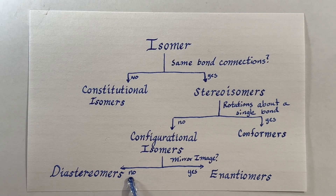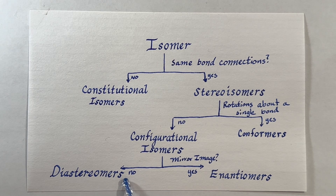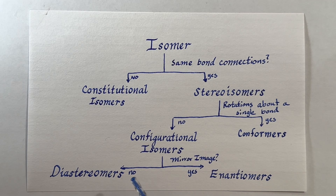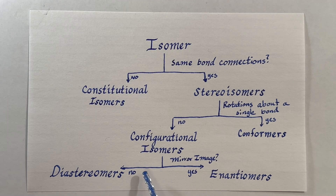Diastereomers do not have a mirror image of each other. A very good example of these would be cis and trans isomers around a double bond. Since we cannot have a rotation around those double bonds, those are unique molecules.